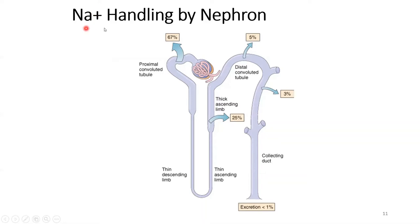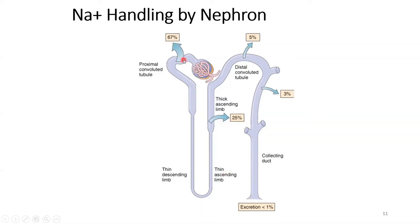Sodium handling by the nephron: the proximal convoluted tubule handles the maximum — the largest share, 67% of sodium reabsorption. Then the thick ascending limb of the loop of Henle reabsorbs 25%. In between, approximately 8% of sodium may or may not be reabsorbed, and less than 1% is normally excreted. This is the normal situation, not talking about volume contraction or expansion.